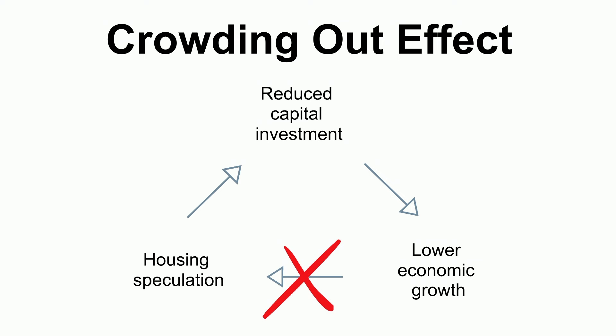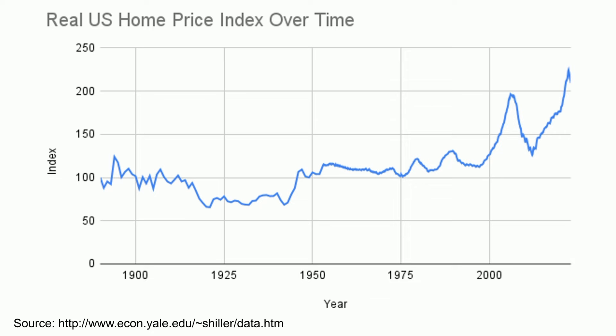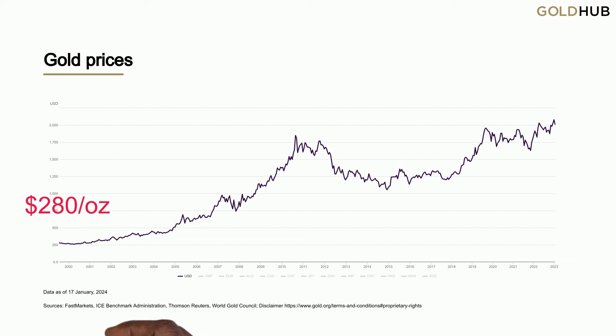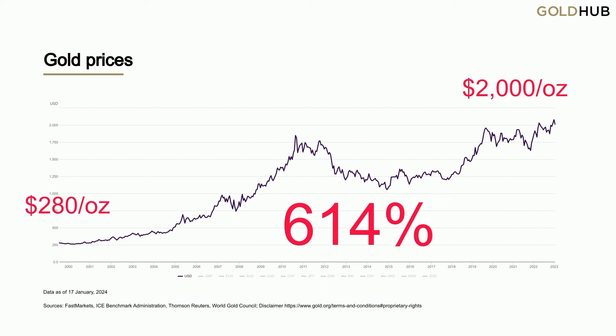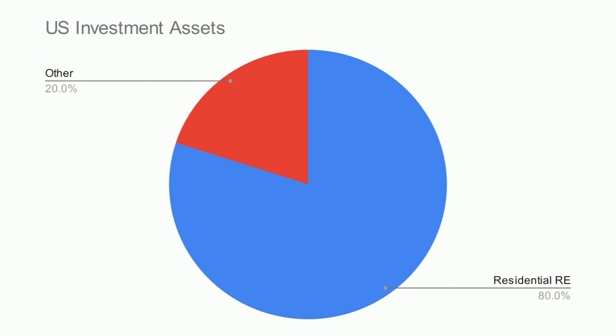Residential real estate has exhibited a prolonged multi-decade run-up, obviously. However, compare this to the run-up in gold, which rose from $280 per ounce in the year 2000 to over $2,000 in 2024 — a 614% increase. Gold's ability to exhibit these incredibly wide price swings is part of its appeal to speculators. If housing exhibited gold-type swings in pricing of several hundred percent, it could end up accounting for 80% or more of total investable assets in the U.S. Does this sound sustainable?